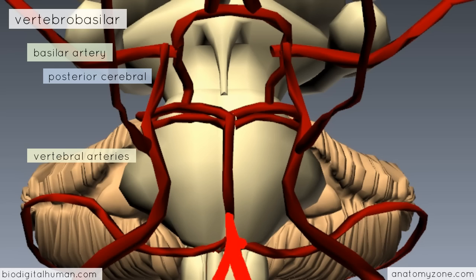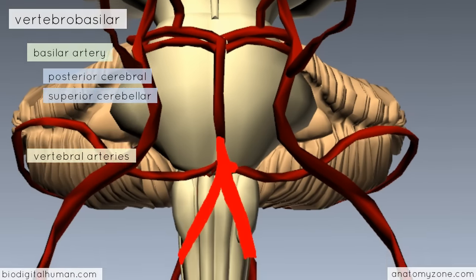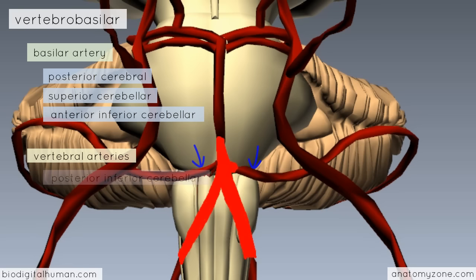Looking at the branches of the vertebrobasilar system, there are three main branches supplying the cerebellum. At the top, two branches come off either side of the basilar artery just before it terminates — these are the superior cerebellar arteries. There are also inferior cerebellar arteries: the anterior inferior cerebellar arteries arise from the bottom of the basilar artery, while the posterior inferior cerebellar arteries come off the vertebral arteries.